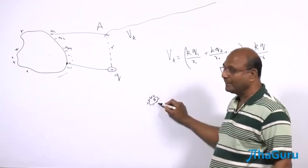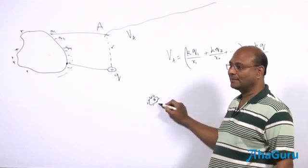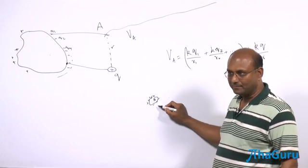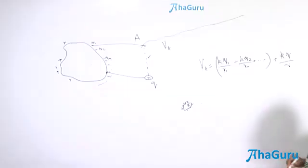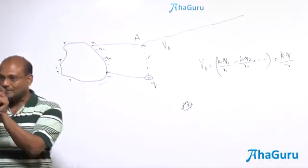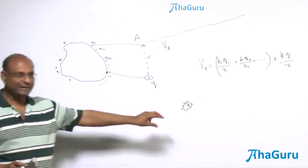If I ask you the field very close by, we do know it is sigma by epsilon naught, except we don't know what is sigma. But if I ask you the field here, far away, what would the field be? It will be kQ by r.